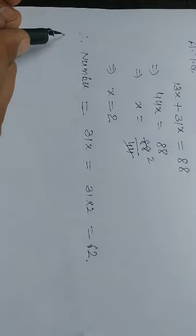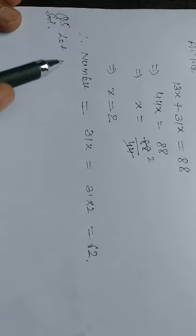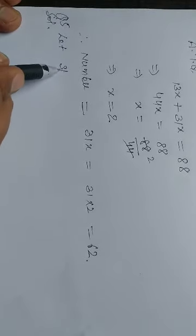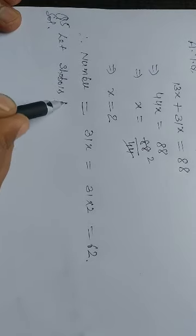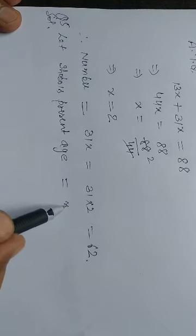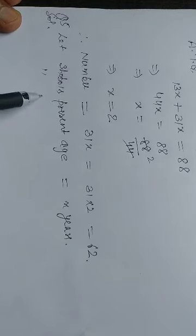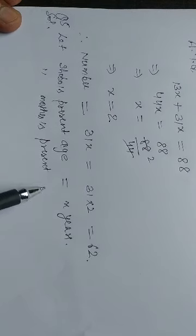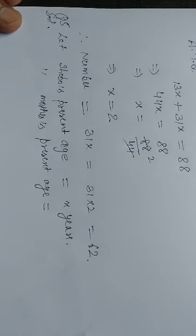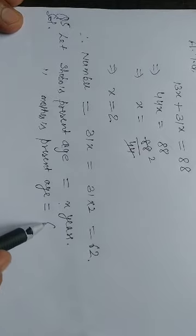Let Shobo's present age be equal to x years. Shobo's mother's present age is 6 times Shobo's present age, so it is 6x years.